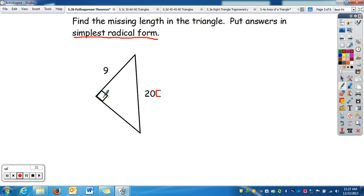20 is c, because that's the hypotenuse, and the reason I know that, it's directly across from the right angle, and then 9 we can say is a, or we can say is b. It doesn't matter. So, writing it out, we have 9 squared plus b squared equals 20 squared.